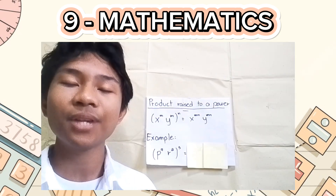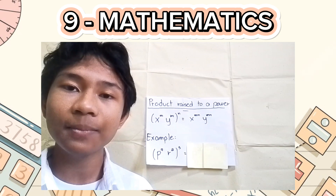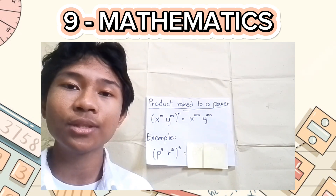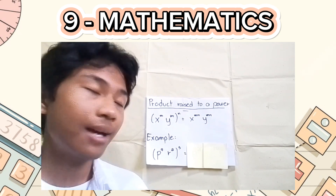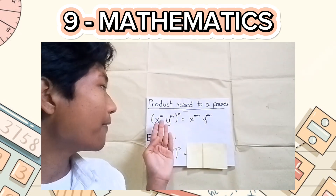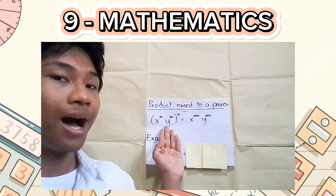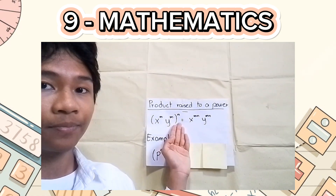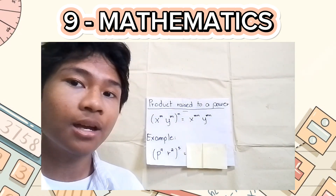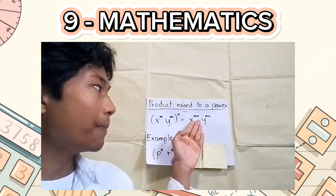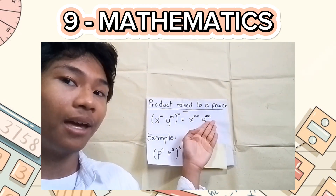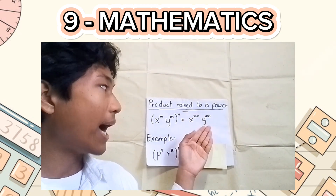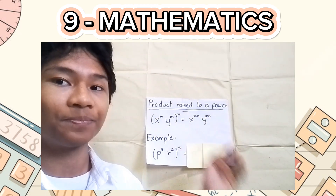Next is the product raised to a power. I know that the name might be complex, but trust me on this because it's like we're using the power rule. To visualize, here we have x raised to m, y raised to m, all raised to n. If we will simplify this, we will get x raised to m times n, y raised to m times n.